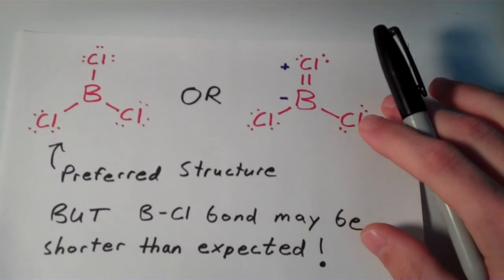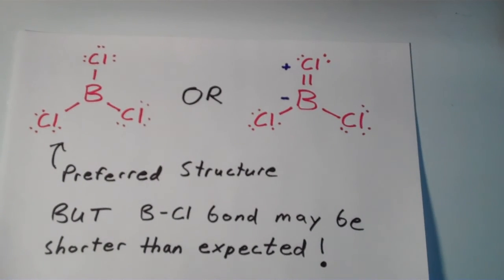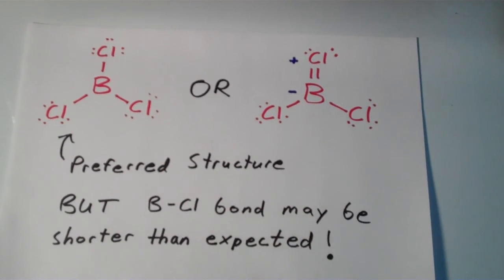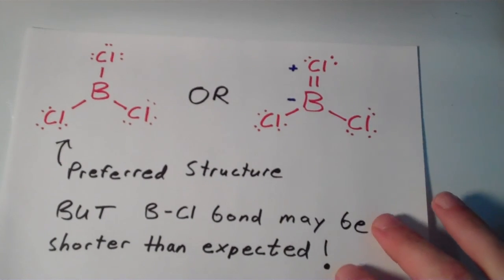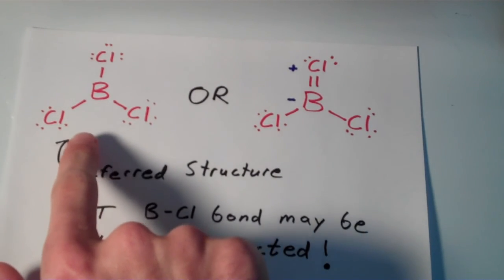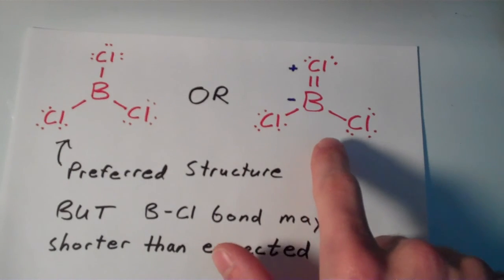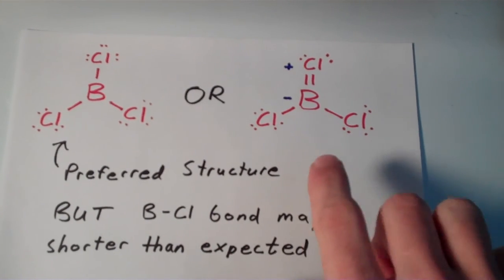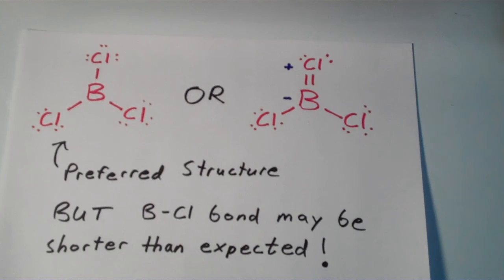But one little caveat here, the boron chlorine bond in BCl3 actually might be shorter than expected, and this is according to experimental evidence. So while this is the accepted structure, this structure may have a small contribution to the overall molecule.